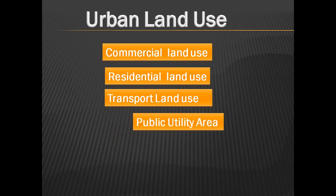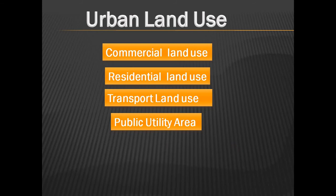Next is public utility area. For the various needs of the population, some services are provided by local governing bodies, state government, or central government. The area under these services comes under this category — e.g., hospitals, post offices, police stations, police grounds, schools, colleges, and universities. These services help diffuse the tensions caused due to a burgeoning population.